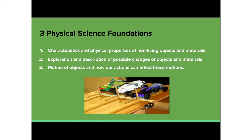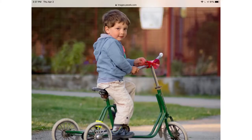The third foundation is the motion of objects and how actions can affect these motions. Children can describe the motion of objects in terms of speed or direction, and explore the effect of their actions on objects such as by pushing, pulling, or rolling them. An example can be found on the playground — a child on a tricycle can control speed and direction by pushing harder to go faster and turning the handle to change directions.